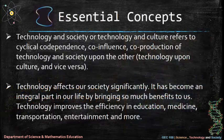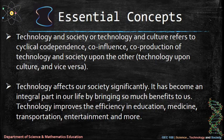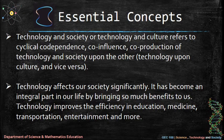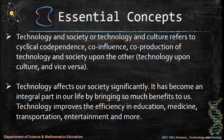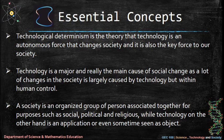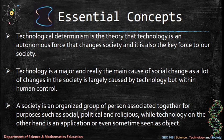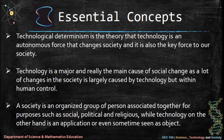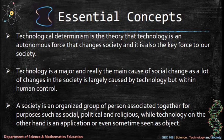Essential concepts: technology and society, or technology and culture, refers to the cyclical co-dependence, co-influence, and co-production of technology and society upon each other — technology upon culture and vice versa. Technology affects our society significantly and has become an integral part of our life, bringing many benefits. Technology improves the efficiency in education, medicine, transportation, entertainment, and more. Technological determinism is the theory that technology is an autonomous force that changes society and is also the key force to our society. Technology is a major cause of social change, largely driven by technology but within human control. A society is an organized group of persons associated together for social, political, and religious purposes, while technology is an application or object.